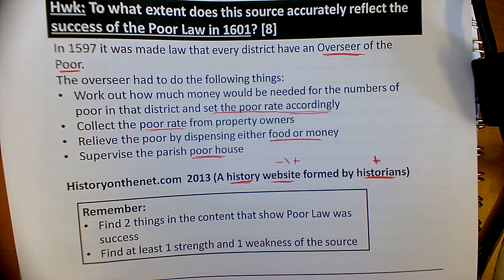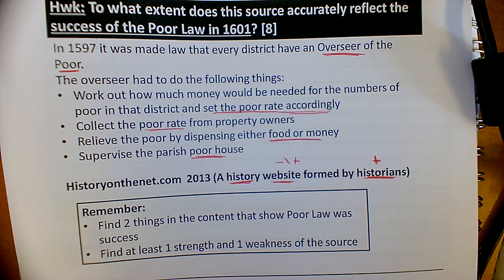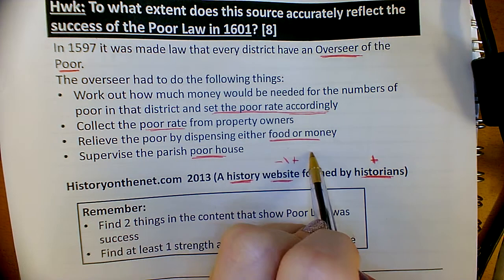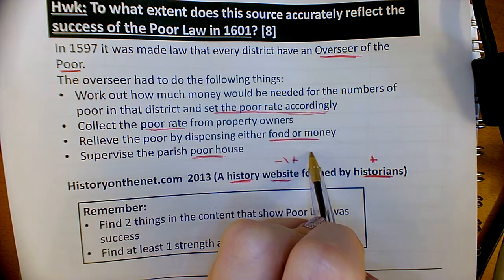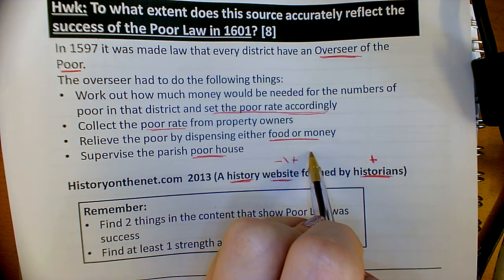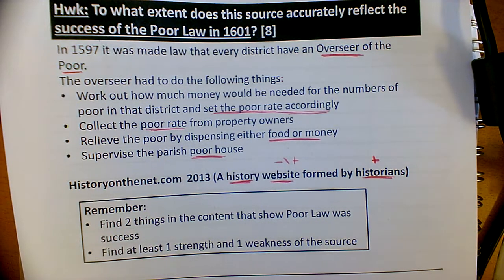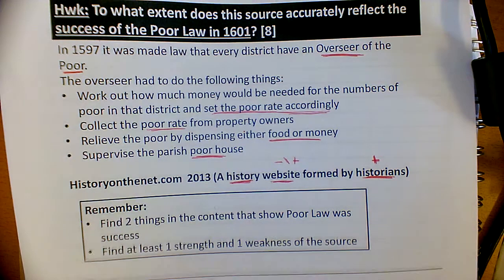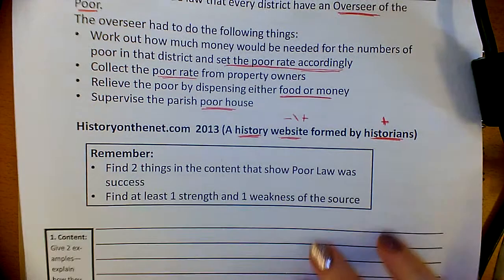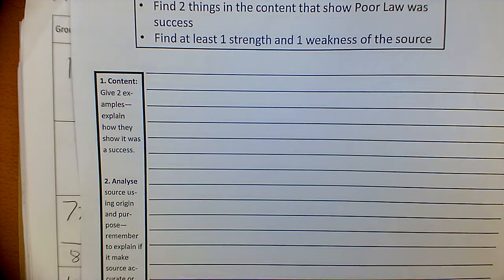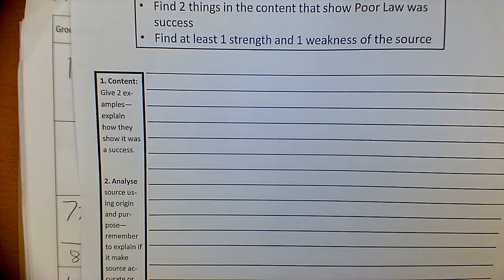In terms of weakness, we haven't really got a strong weakness from the attribution, which is when I rely on the content of the source for my weakness. As we said already with our own knowledge, the weakness is that some key information about the Poor Law is missing. So we're fine — we've got a strength and a weakness. You would then go on to create your COUP paragraph. I've split it into content and origin, then another paragraph for your strength and weakness, but you can put it all in one paragraph — I don't mind.